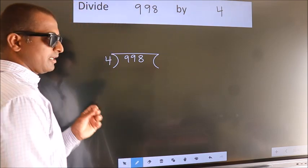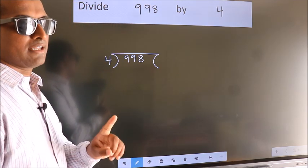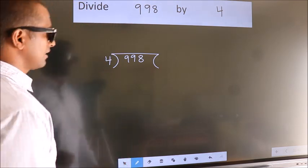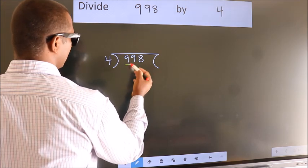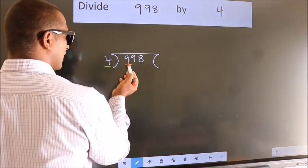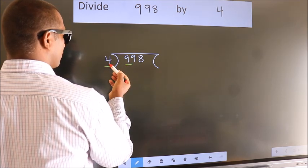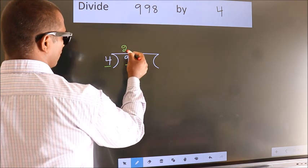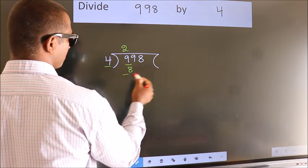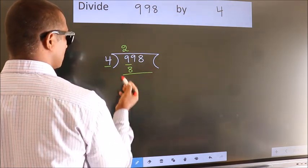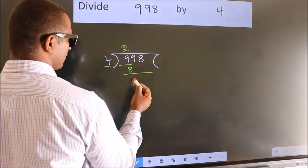This is your step 1. Next, here we have 9, here 4. A number close to 9 in 4 table is 4 twos, 8. Now we should subtract. We get 1.